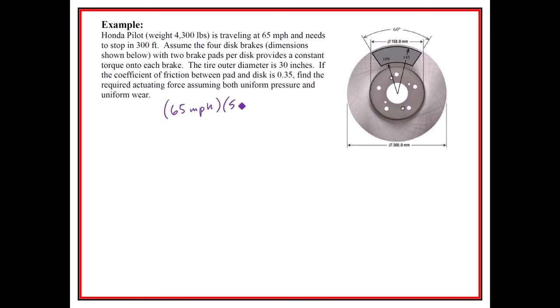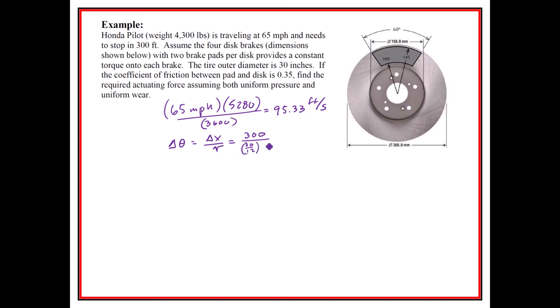First, 65 miles per hour converts to 5,280 feet per mile divided by 3,600 seconds per hour, giving 95.33 feet per second. Then for the number of wheel rotations, delta theta equals the delta distance divided by the tire radius. Working that out with 300 feet and a 30-inch diameter tire — 30 inches divided by 12, divided by 2 — gives 240 radians.